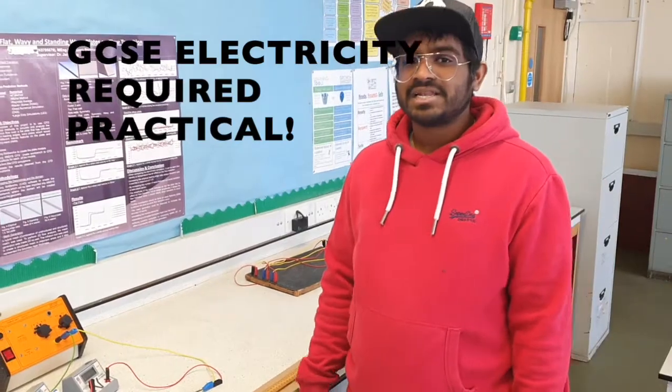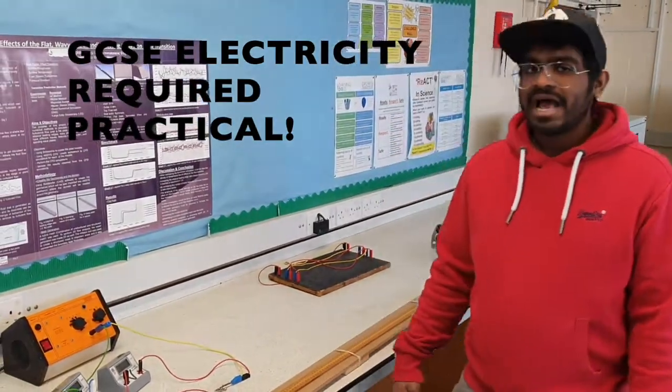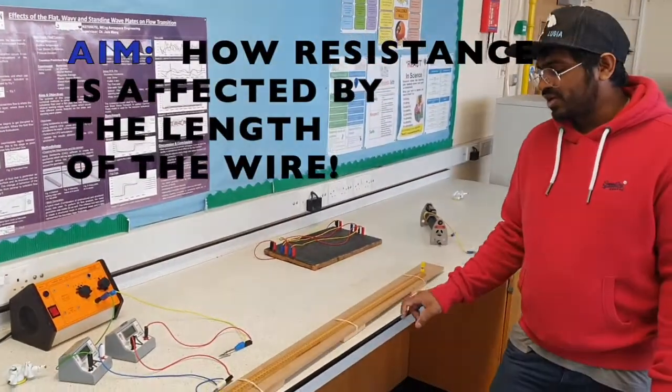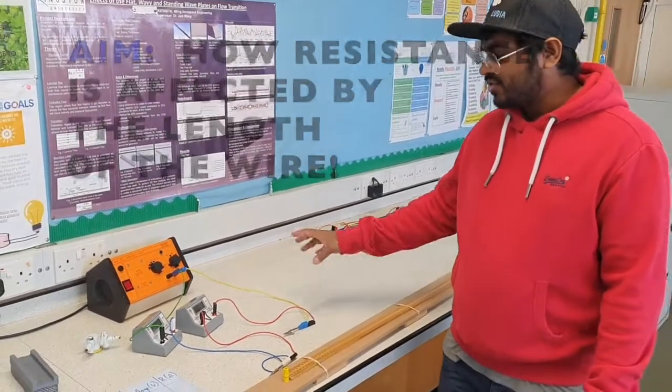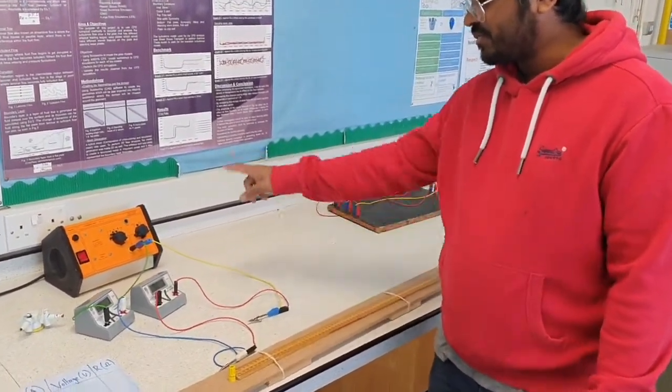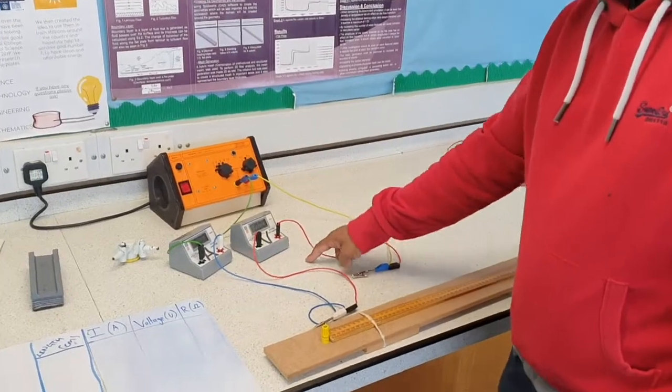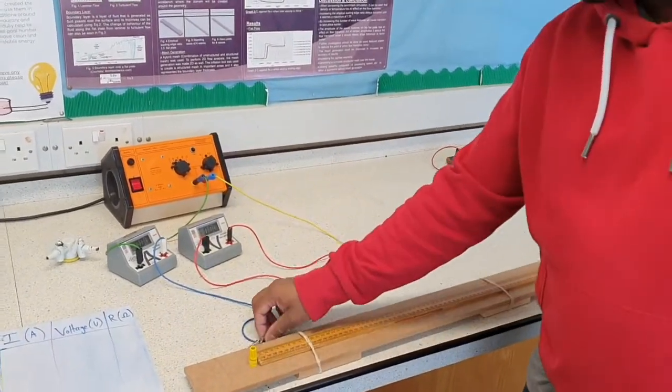I'm going to do a GCSE electricity required practical on how resistance depends on the length of the wire. Here I've got an example experiment set up where I've got the power pack, the ammeter, and the voltmeter that's connected in parallel to the testing wire.